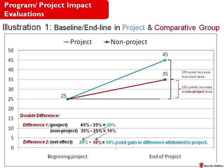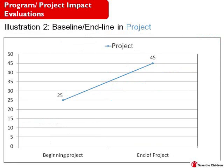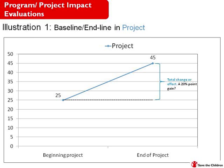Let's consider another example to estimate the net change or the pure impact attributable to our project. We'll use the same scenario: 25% immunization coverage at baseline and 45% at the end of the project three years later. The first difference is a 20 percentage point increase from 25% at baseline to 45% at the endline.